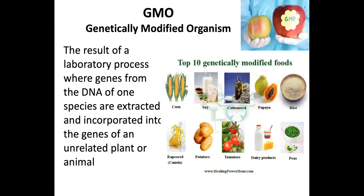This takes us into a GMO, which is a genetically modified organism. When you go to the grocery store, you see things that say GMO and things that say non-GMO. Something that is genetically modified is the result of a laboratory process where genes from the DNA of one species are extracted and then incorporated into the genes of an unrelated plant or animal.